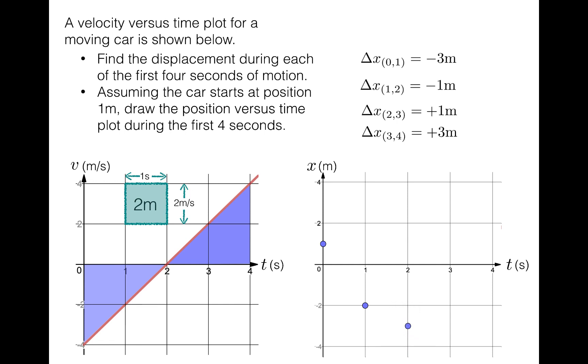Then, over the next second, the displacement is plus one meter, which brings the object back to position minus two meters. And in the last second, the displacement is plus three meters, which brings the object back to position plus one meter. It's sort of cool to note that at second four, the car has returned to the starting position. If you look back at the velocity versus time plot, you can see that this makes sense, because there are equal areas above and below the x-axis in the first four seconds. So the displacement over that four second interval should be zero, and the object should return to its starting point at t equals four seconds.